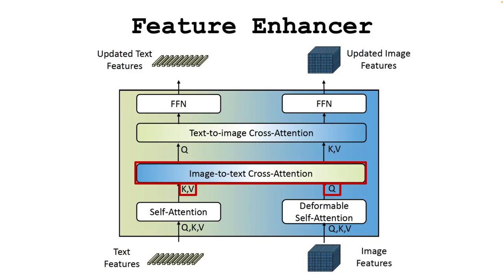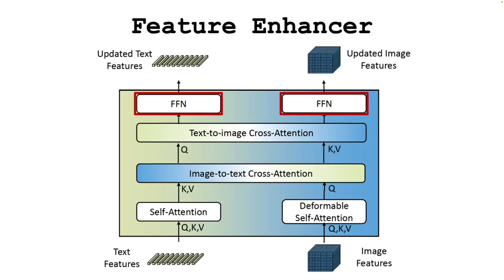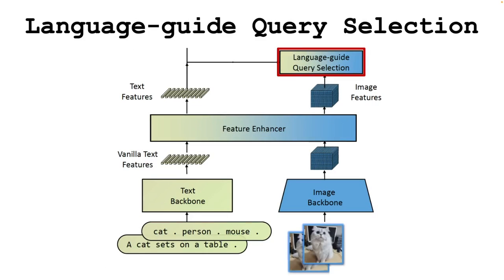The model learns to combine the two modalities by firstly looking at which parts of the textual input are relevant for a specific visual feature. Then we have the text-to-image cross-attention layer, where the model does the opposite and learns what parts of the image are important for a specific textual query using the attention mechanism. Finally, we have a feed-forward layer that creates the output of the model, and some self-attention mechanisms for both the textual and visual features at the beginning to increase the expressivity of the model. The next important module is the language-guided query selection, whose role is to select the visual features that are the most relevant for a given input text query.